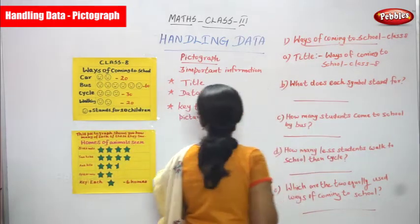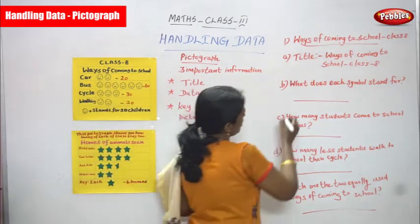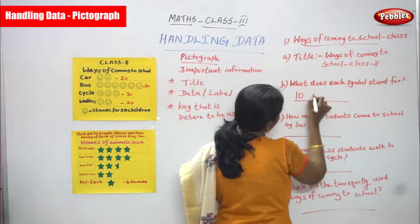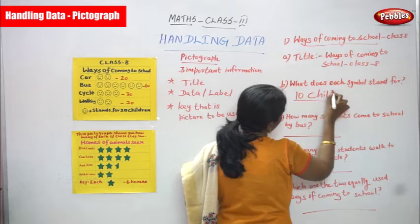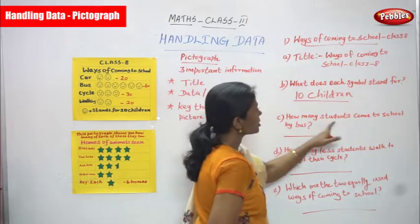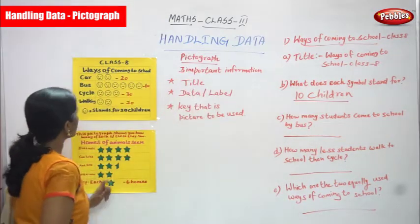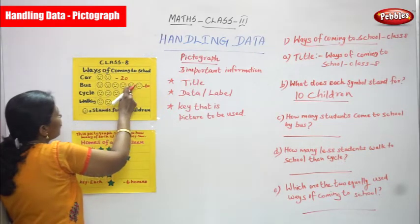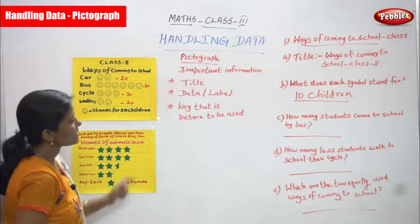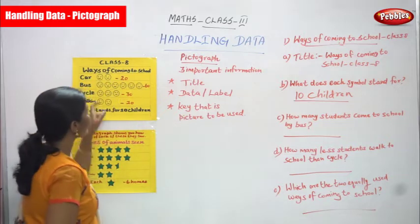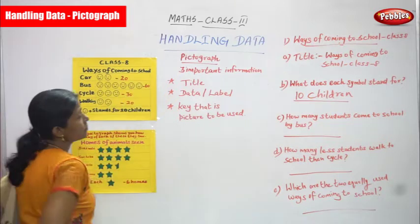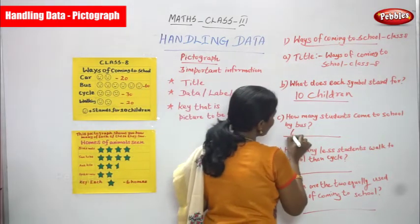Next question: what does each symbol stand for? Each smiley stands for 10 children. Next question: how many students come to school by bus? There are six smileys, and each smiley stands for 10 children — so 10, 20, 30, 40, 50, 60 — that is 60 students come to school by bus.